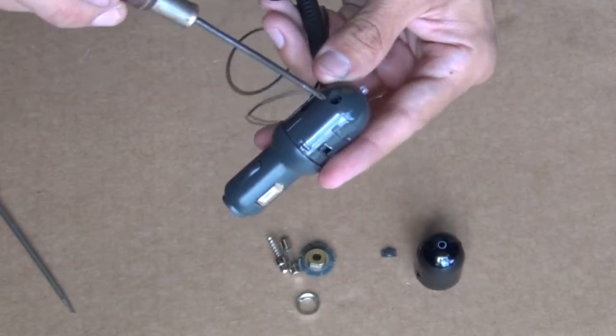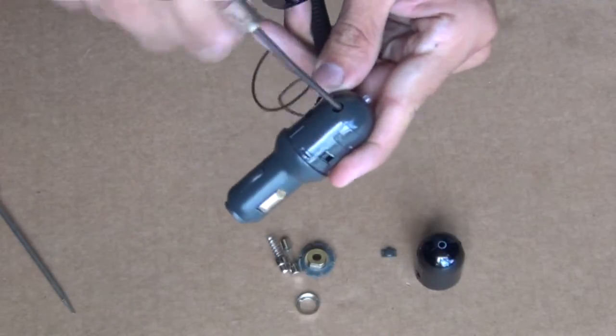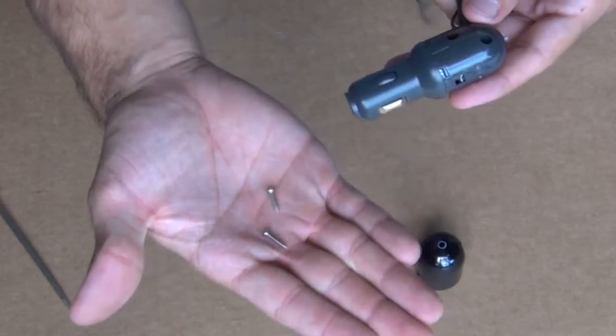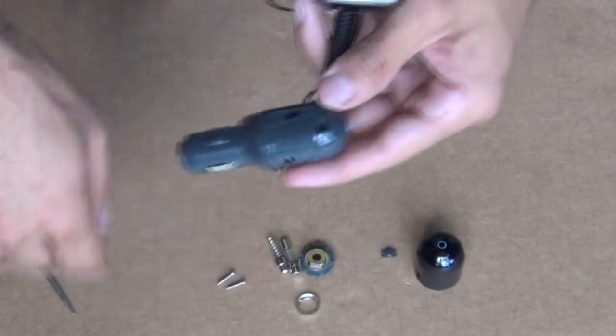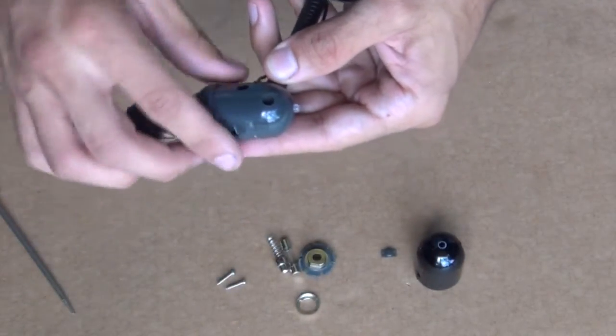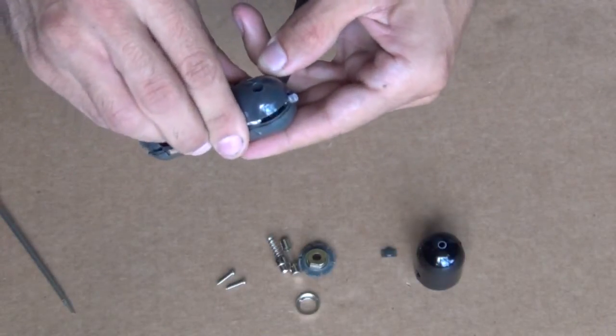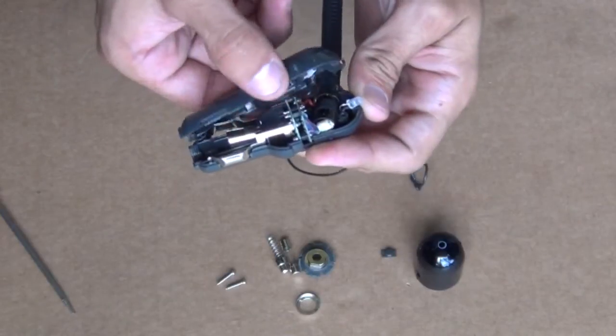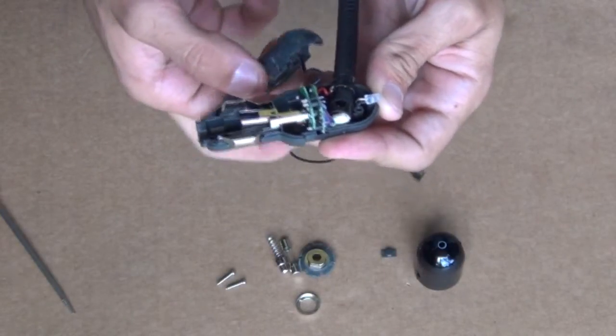So I'm just going to use a real tiny Phillips screwdriver and take those screws out. Okay, and once those screws are loose, you can take those out and then just gently split this case in half.